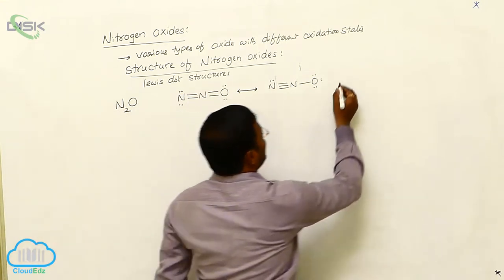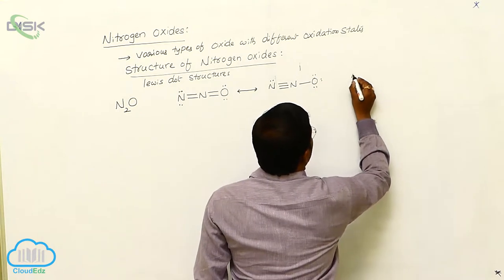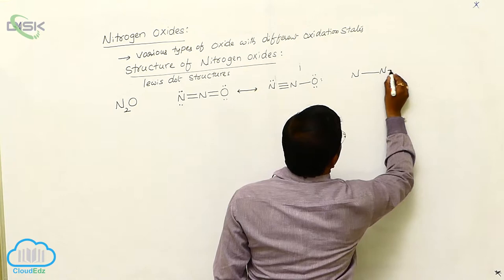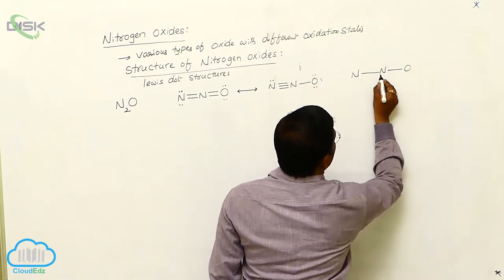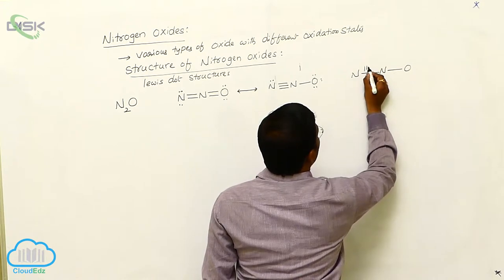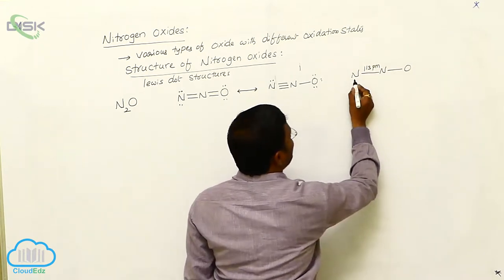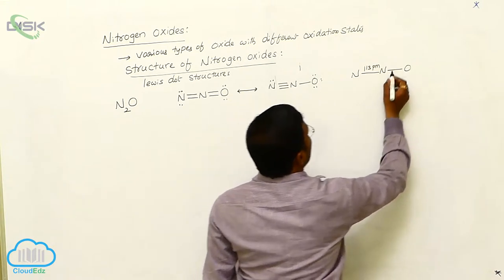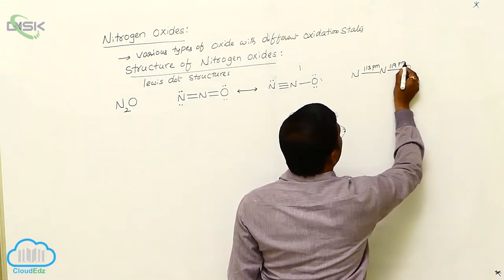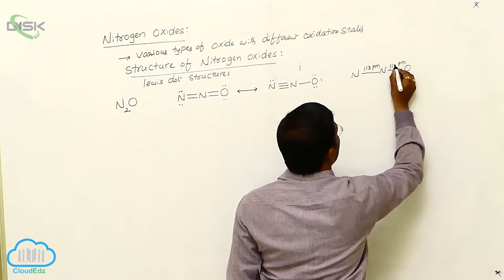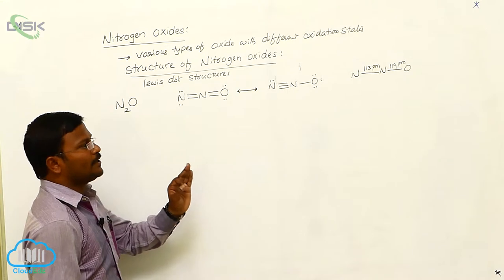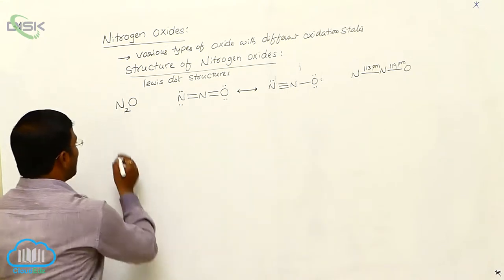In dinitrogen monoxide, the bond lengths are: 113 picometers between the two nitrogen atoms, and 119 picometers between nitrogen and oxygen.